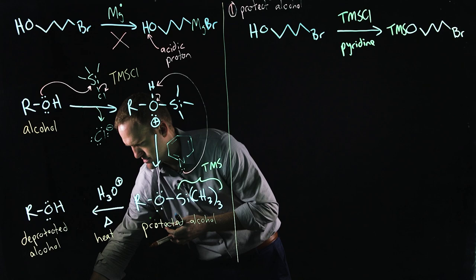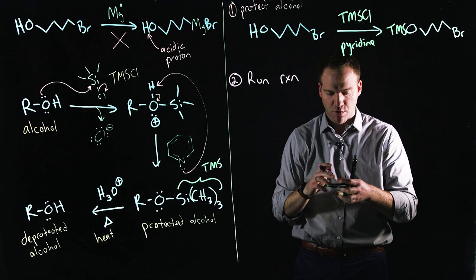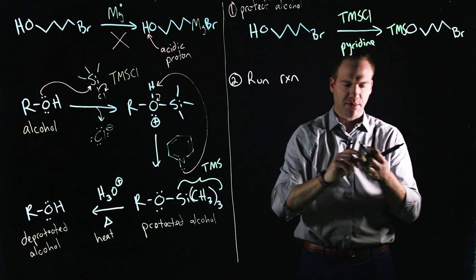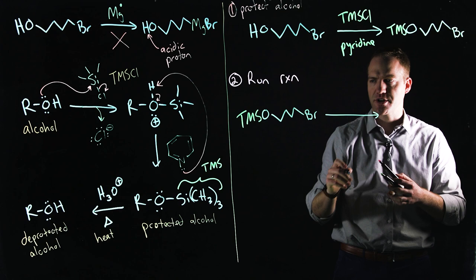Step two. We want to run our Grignard reaction. So this is going to be the reaction that we were wanting to run initially, but we couldn't because we were limited by our acidic proton. So I'm going to take my protected alcohol. And in a series of steps, run the Grignard reaction.